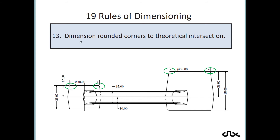Rule number 13: dimension rounded corners to the theoretical intersection. When placing a dimension at a rounded corner, use the intersection of the two lines as the reference point — not just the edge of the arc. If you take reference from the arc line directly, the dimension will be smaller and won't account for the theoretical intersection point. Model-driven dimensions handle this automatically, but manually created dimensions require you to identify the theoretical intersection.